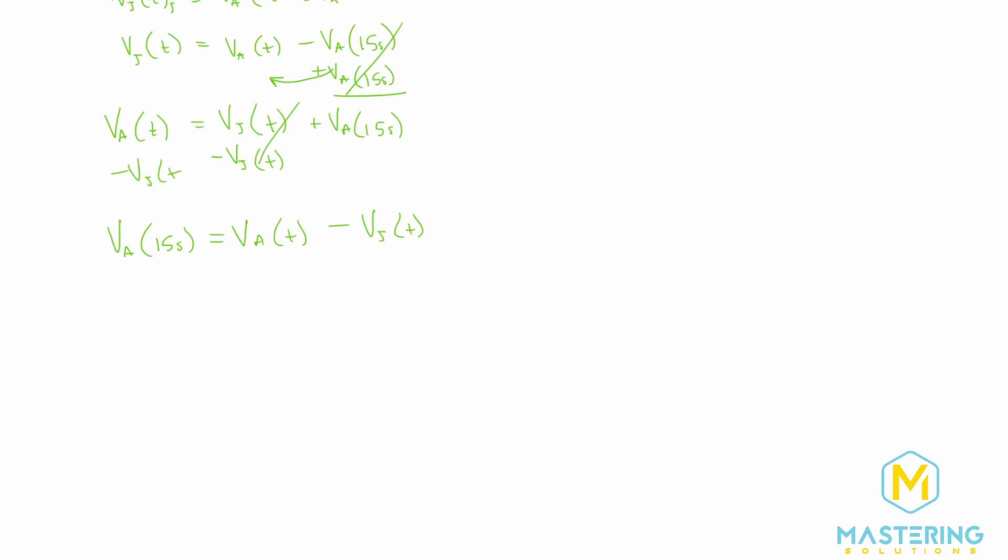Now if we factor out t, we will have va times 15 seconds equals time times velocity minus the velocity of Alyssa. So time is equal to the velocity of Alyssa times 15 seconds divided by the velocity of Alyssa minus the velocity of Jenny.